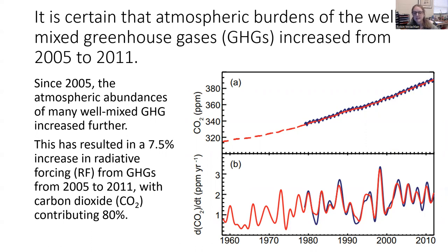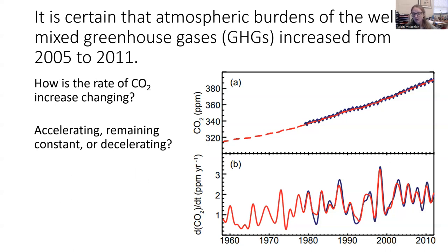Looking at these two graphs: the first shows carbon dioxide increasing over time. The blue line shows day-to-day readings with a seasonal cycle — you can see summer/winter oscillations back and forth. The red line averages it out per year, making it smoother. The bottom graph shows the change in CO2 per unit time — this indicates acceleration or deceleration. If the slope of the bottom graph is up, CO2 increase is accelerating; if down, it's decelerating; if flat, the increase is staying constant. The answer is accelerating — every year we're putting more CO2 into the atmosphere than the previous year.